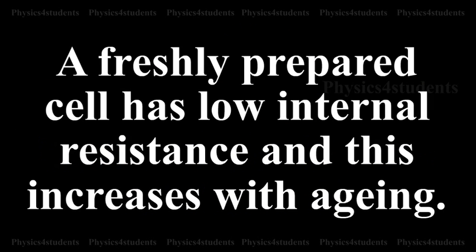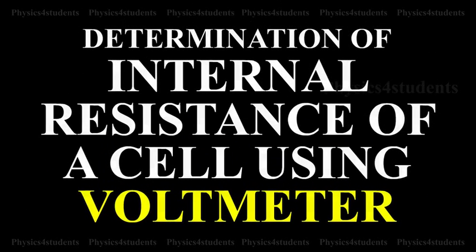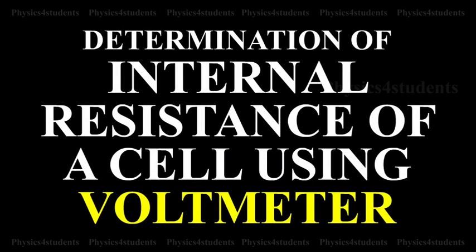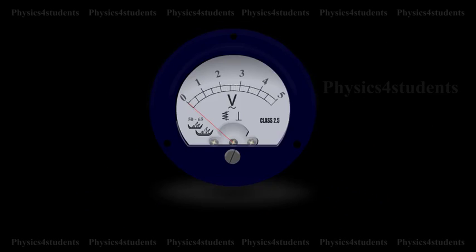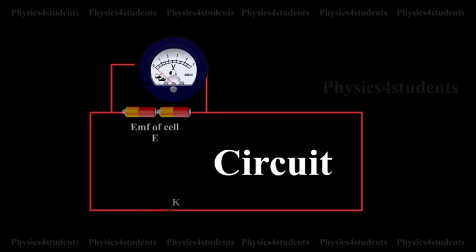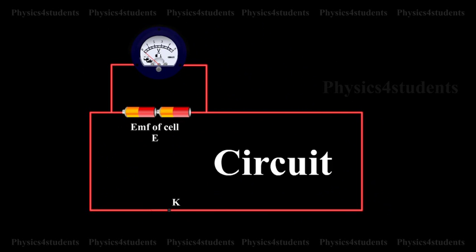A freshly prepared cell has low internal resistance, and this increases with aging. Determination of internal resistance of a cell using voltmeter. The circuit connections are made as shown in the animation.